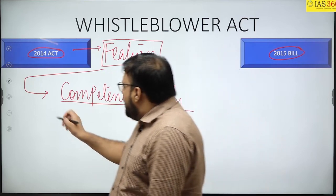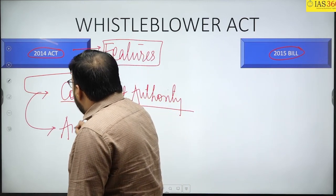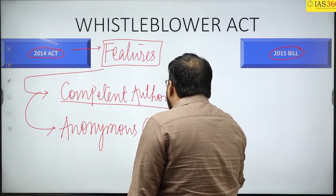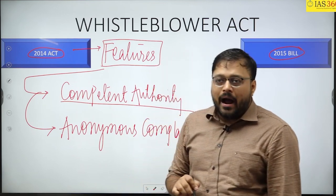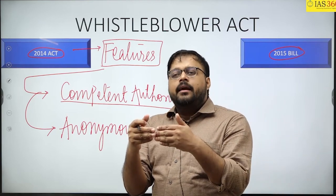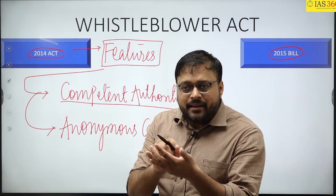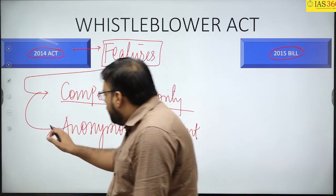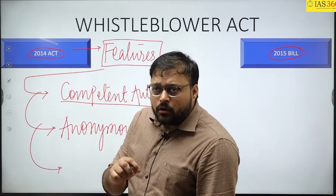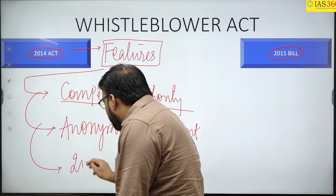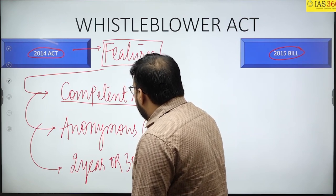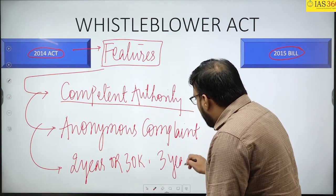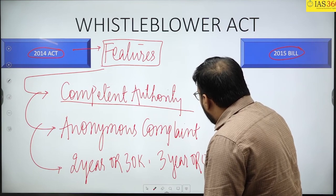Second, you cannot make an anonymous complaint — you must reveal your identity when going to the competent authority. You cannot simply put the name of the accused in a sealed envelope and post it. Third, if you provide false or frivolous information, there is a penalty of two years imprisonment or thirty thousand rupees. If someone reveals the identity of the whistleblower, the punishment is three years or fifty thousand rupees.